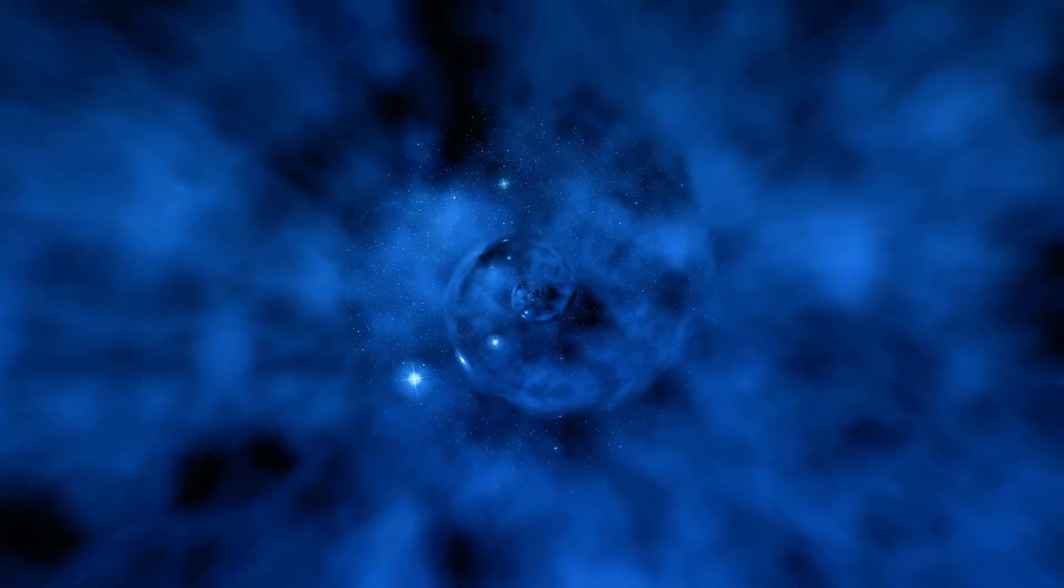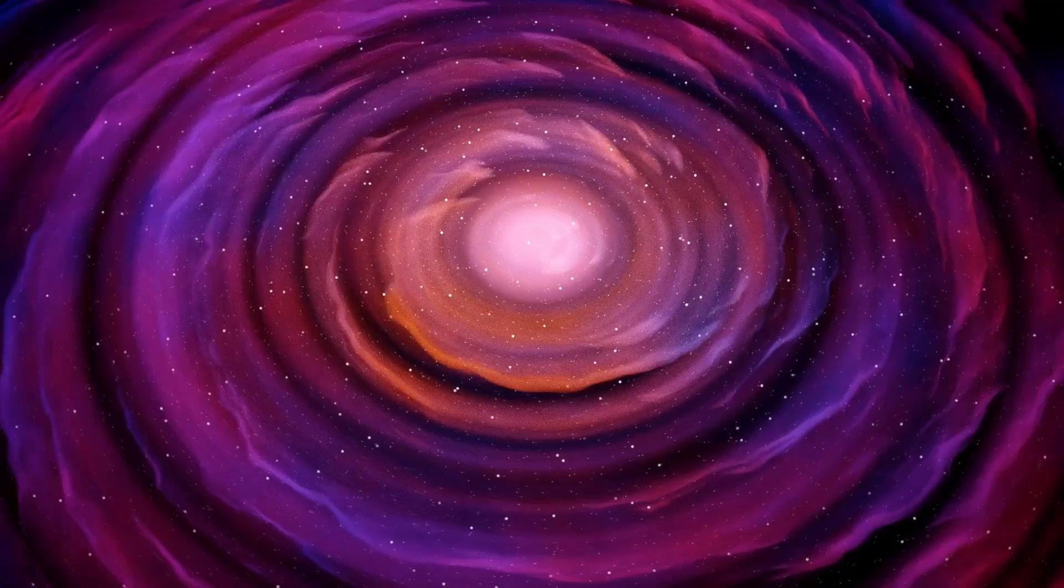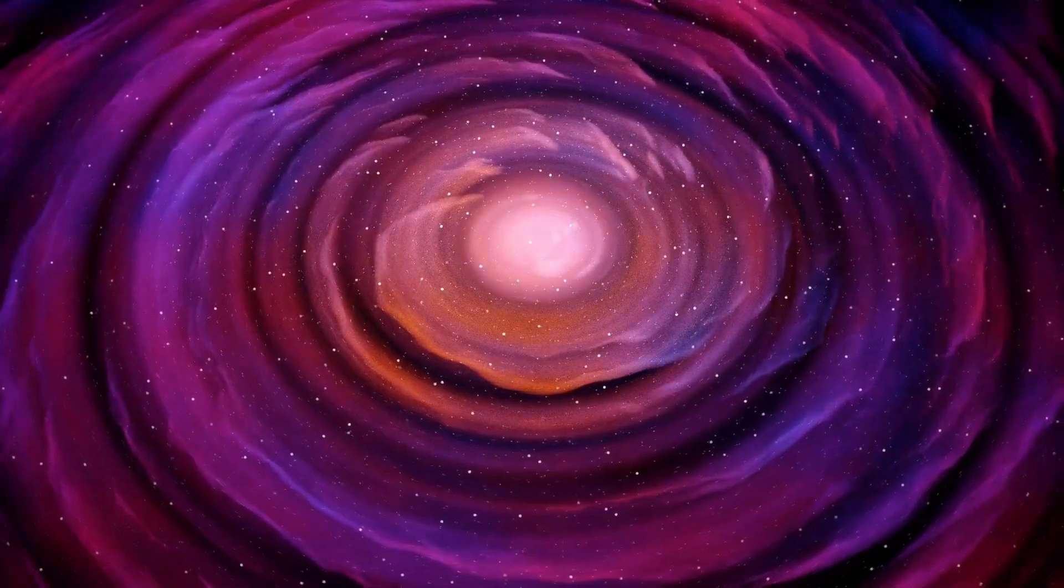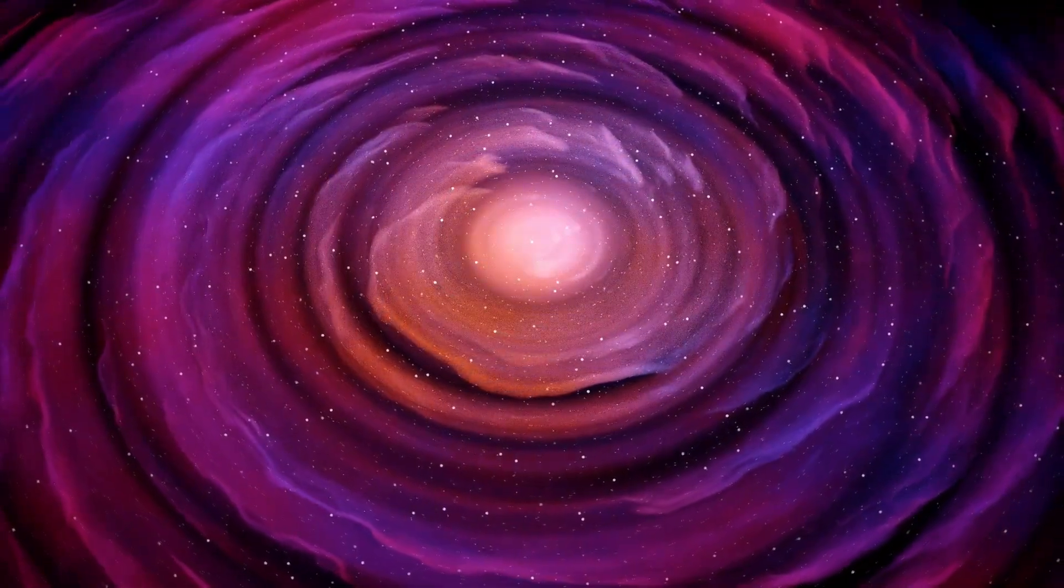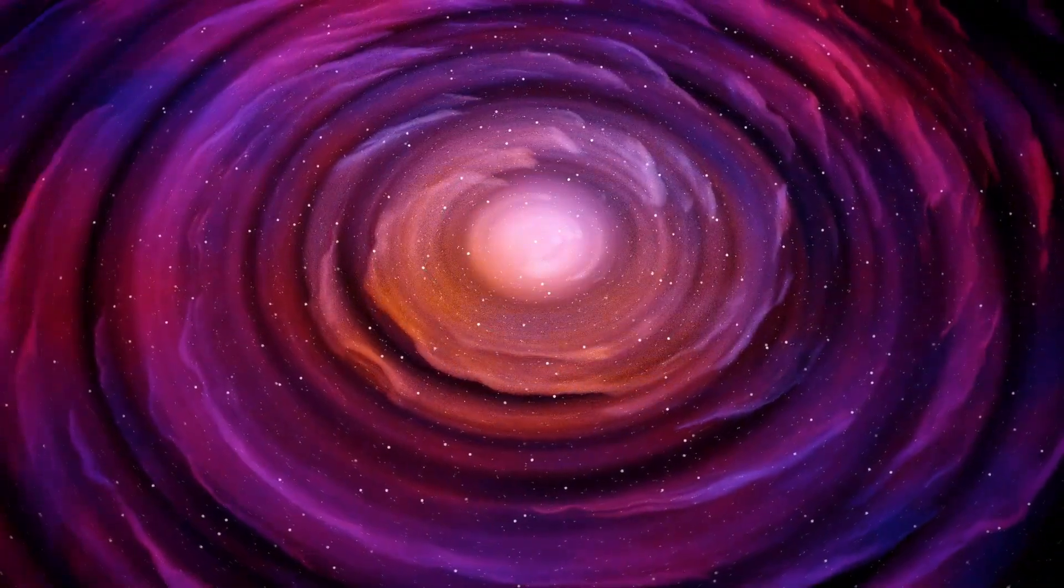Betelgeuse's unpredictable behavior sparked discussions about the potential for an imminent supernova explosion. In a supernova, as the star consumes its remaining fuel, its core collapses, giving rise to a black hole while expelling outer layers at speeds of up to 25,000 kilometers per second.